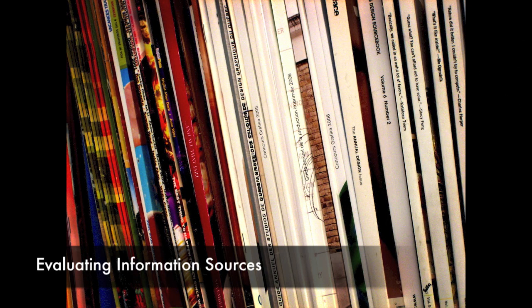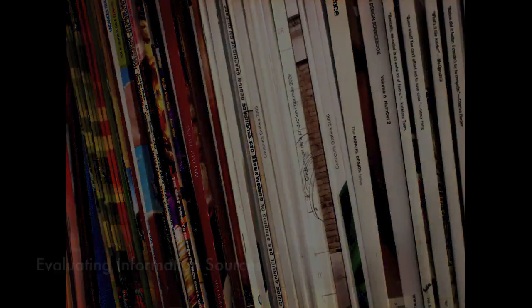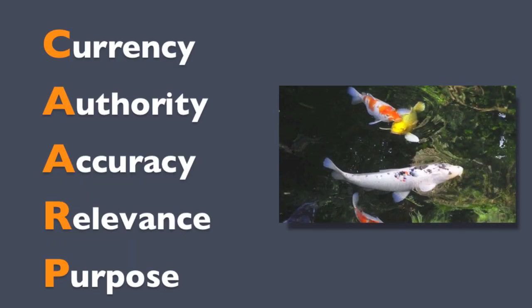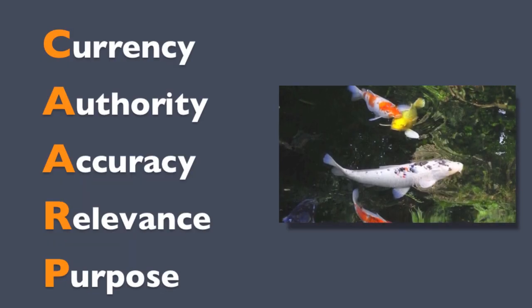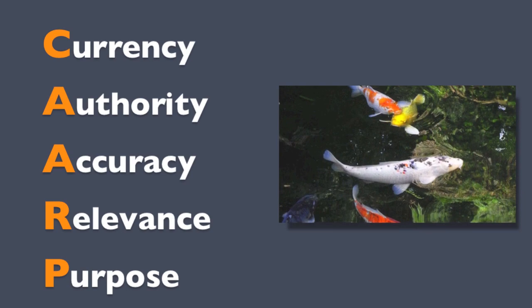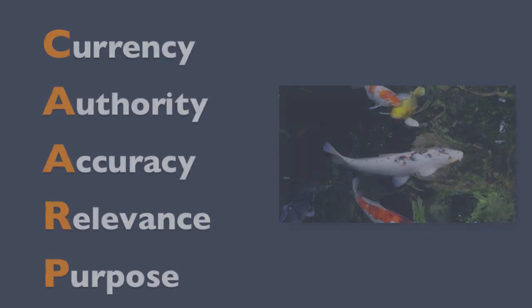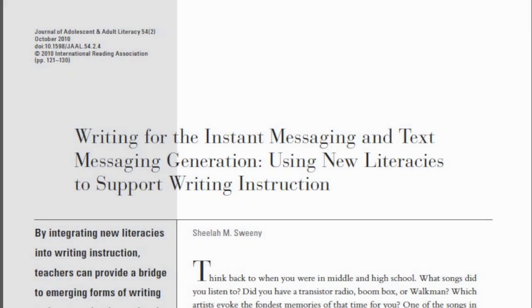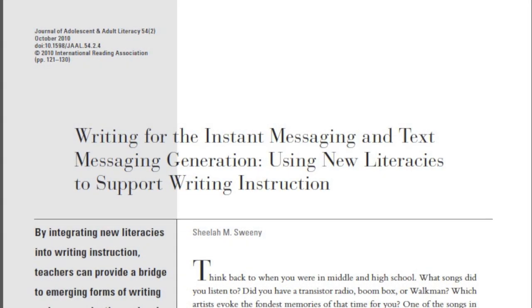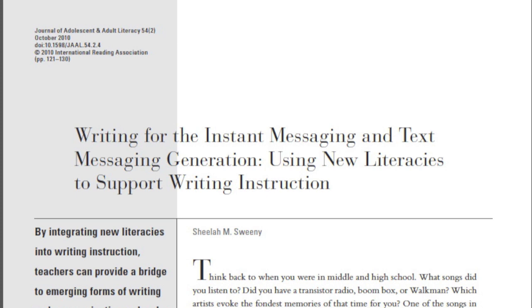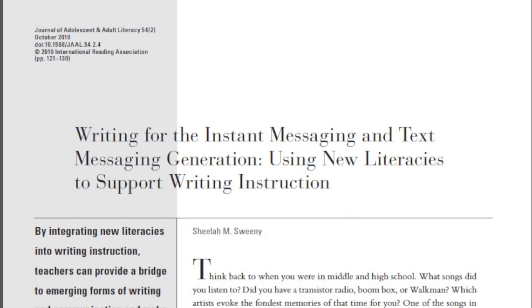When evaluating a source, there are several different criteria you should check for. An easy way to remember those criteria is the acronym CARP — Currency, Authority, Accuracy, Relevance, and Purpose. Let's go through each one of these criteria while looking at a sample journal article.